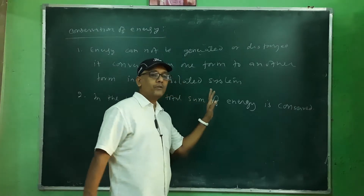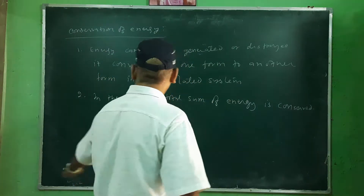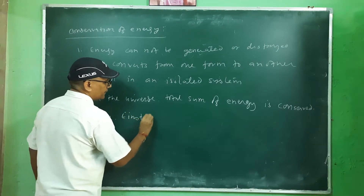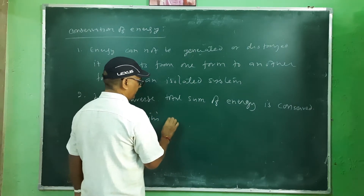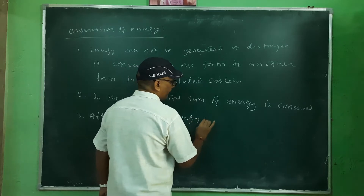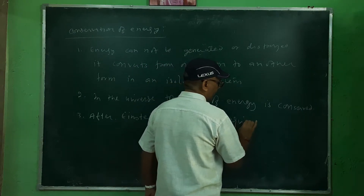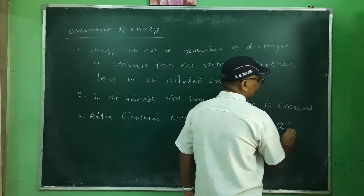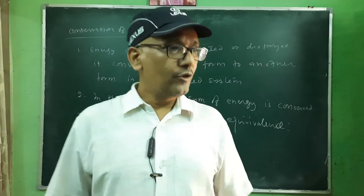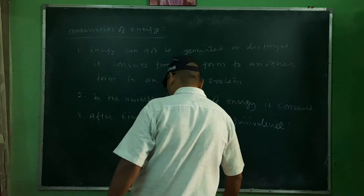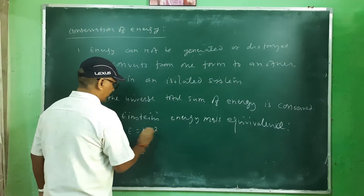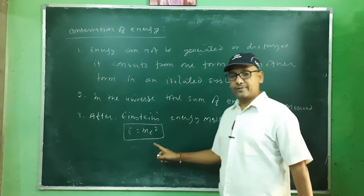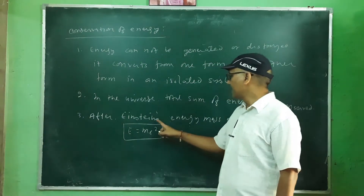However, this is for Newtonian physics. After Einstein introduced his energy-mass equivalence relation in 1905, given as E = mc², this is a very famous relation. According to this, energy can be converted into mass and mass can be converted into energy.